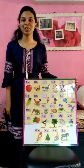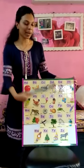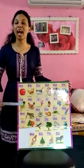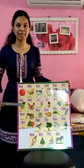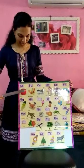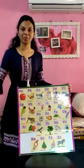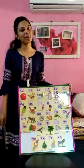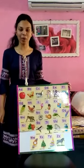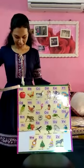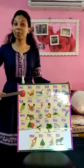Good morning children. Look what I got today. These are alphabets from A to Z. Now let's learn it one by one. A. A for apple.